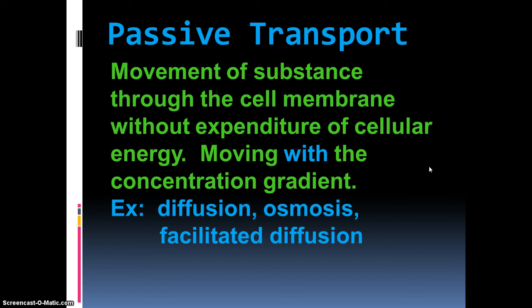Everything we've talked about so far is passive transport. We talked about facilitated diffusion, diffusion, and osmosis. The reason they're passive is because they go from high concentration to low concentration. Because they're going with the concentration gradient — going down the slide — it doesn't take energy to make that happen.